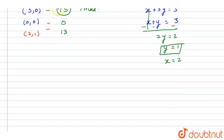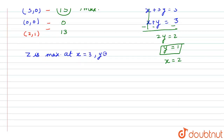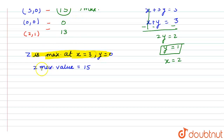Therefore, z is maximum at x equals 3 and y equals 0, and the maximum value of z is equal to 15. This is the answer: z maximum equals 15 at x equals 3, y equals 0. Thank you.